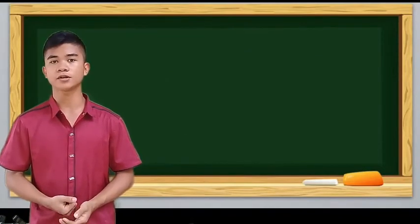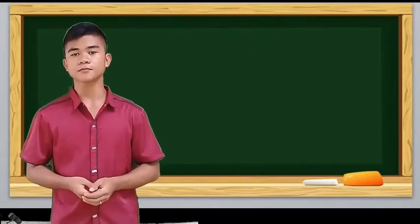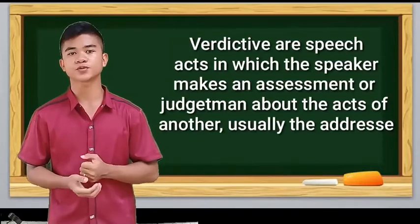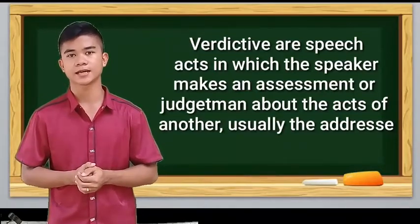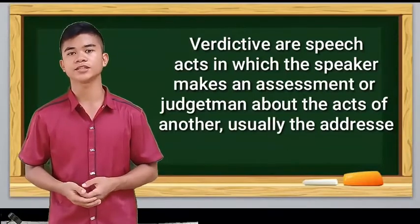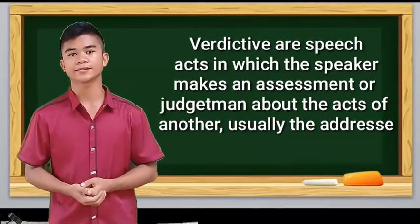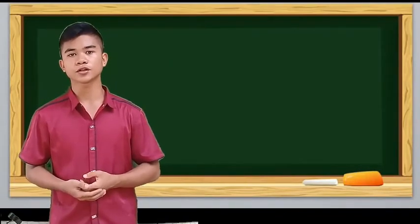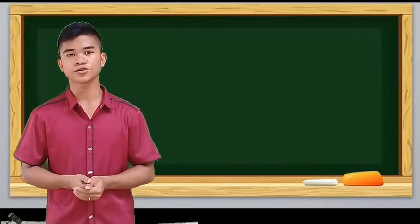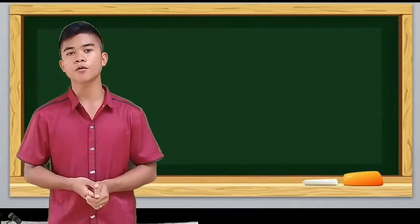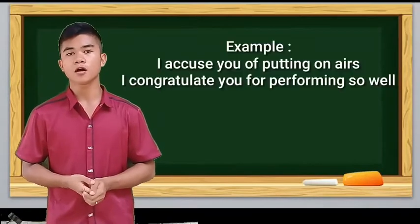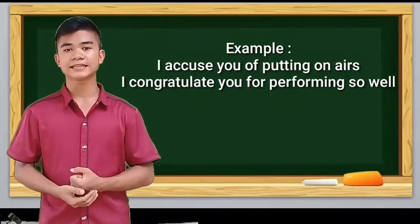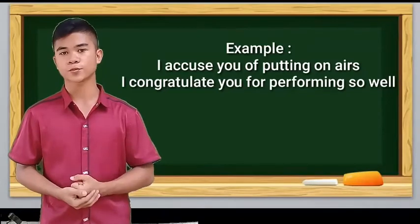The third is verdictive utterance. Verdictives are speech acts in which the speaker makes an exclamation or judgment about the acts of another, usually the addressee. This includes ranking, accusing, appraising, condoning. Verdictive words include accuse, charge, acquit, charge. In the expression frame: I accuse you of. Example of the verdictive utterance is: I accuse you of putting an iris. Next is: I congratulate you for performing so well.